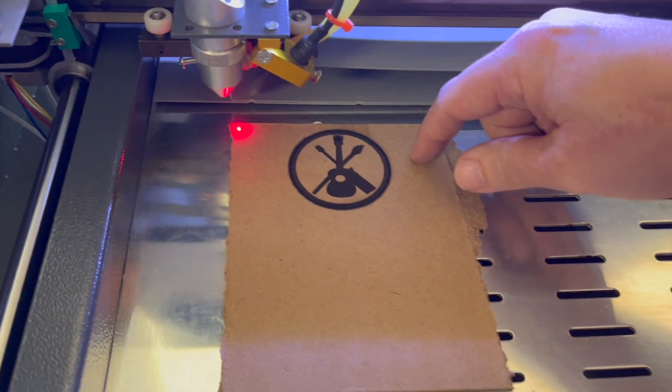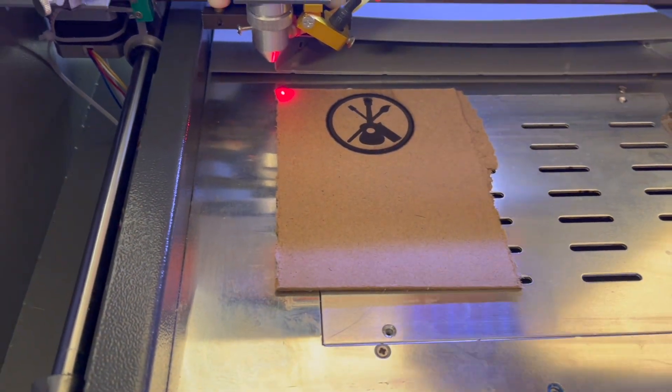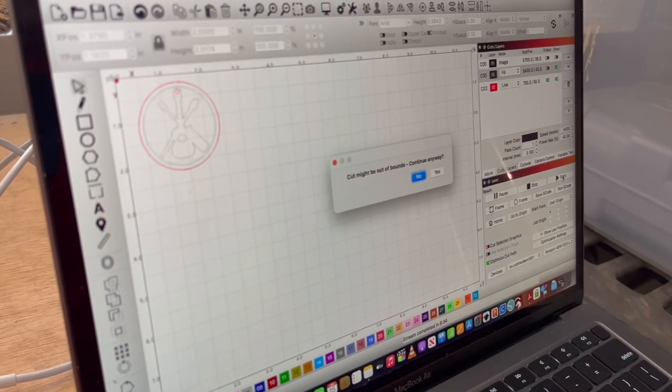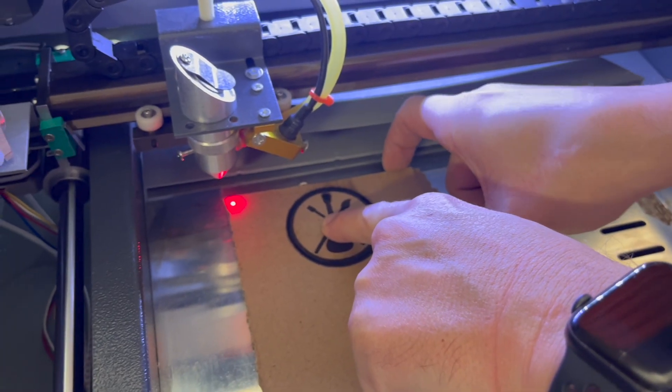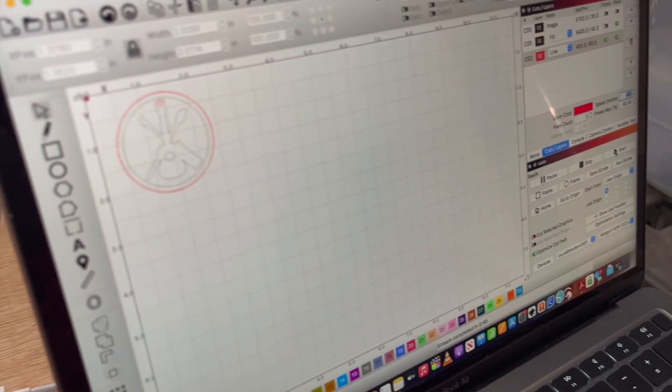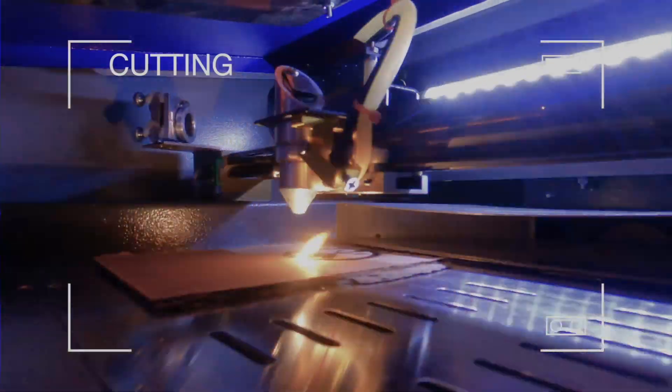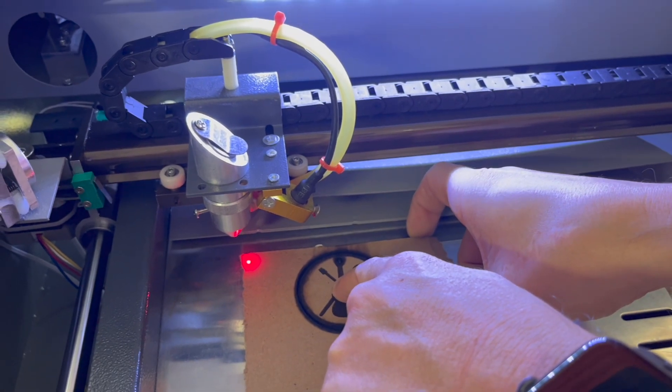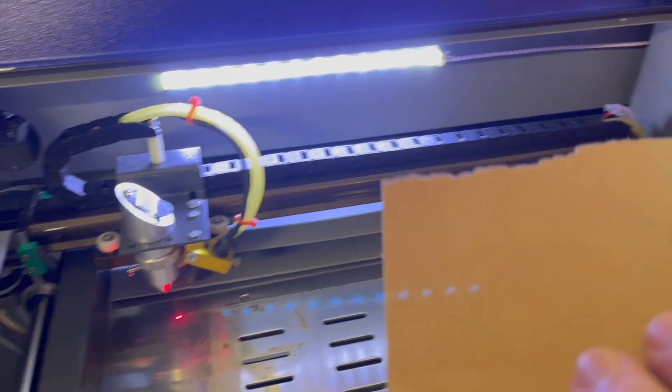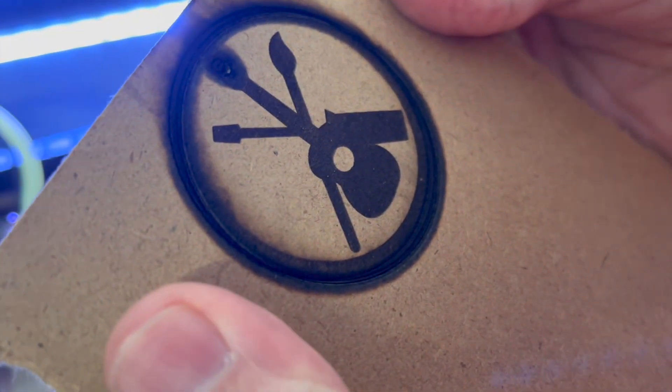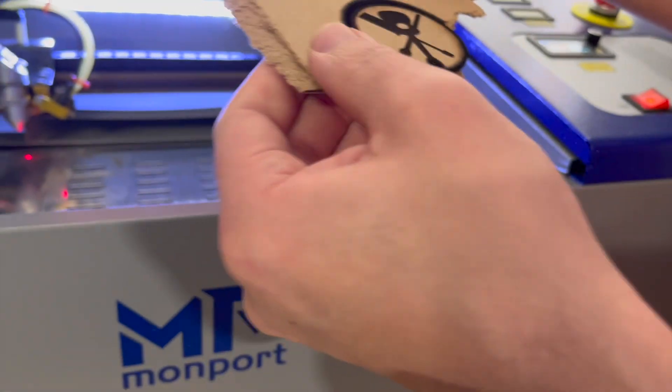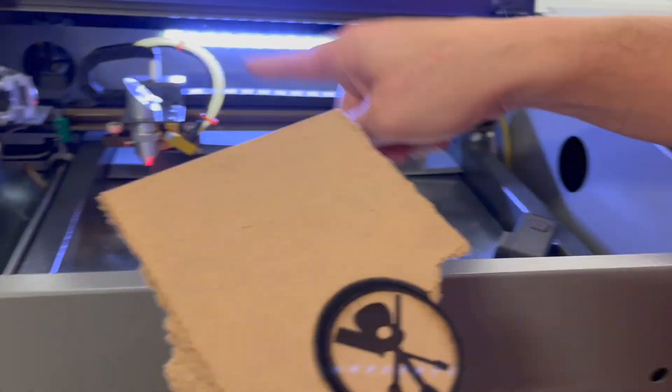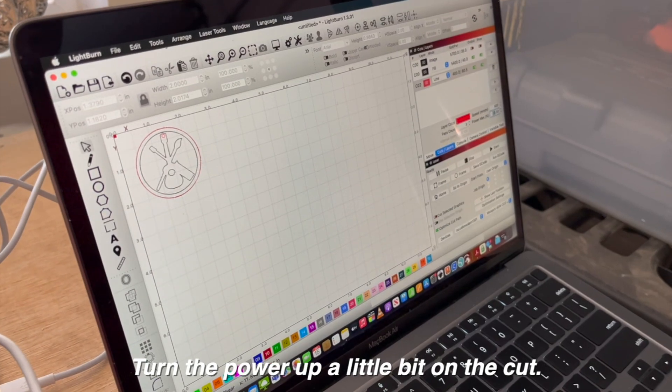So I'm going to leave it right here and I'm just going to run the cutting pass again to see if I can get it to cut through. You're still not all the way through. All right, I got to stop it. But you can see we are charring this pretty badly. Like that's not good. And that's why we have air assist. So I'm going to go ahead and turn this around and we'll do this design again, but with the air on. Turn the power up a little bit on the cut.